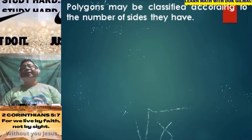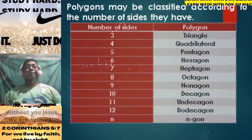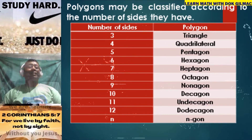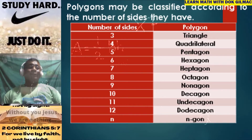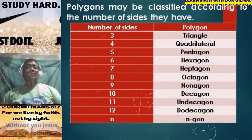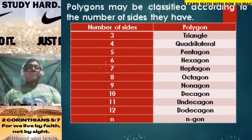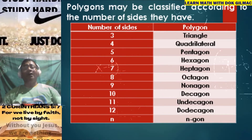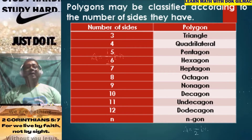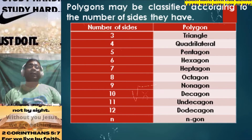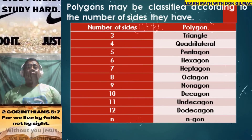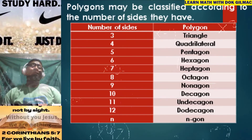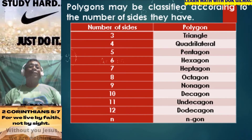Polygons may be classified according to the number of sides they have. Three sides is a triangle. Four sides is a quadrilateral. Five sides is a pentagon. Six sides is a hexagon. Seven sides is a heptagon. Eight sides is an octagon. Nine sides is a nonagon. Ten sides is a decagon. Eleven sides is an undecagon. Twelve sides is a dodecagon. While N sides, we simply call it an N-gon. So we name a polygon according to the number of sides.